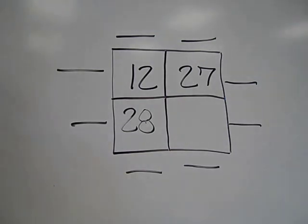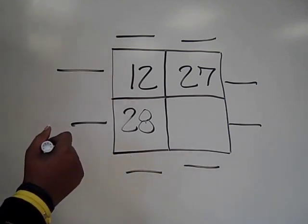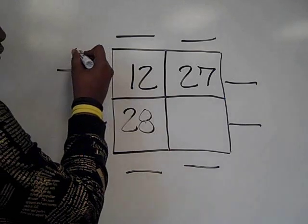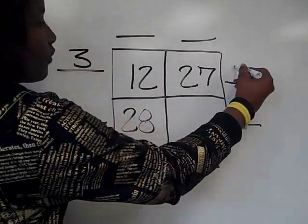First, you can think of factors as common factors. What common factors do twelve and twenty-seven have? Three! Write three in the pair of blanks to the left and right of that row.